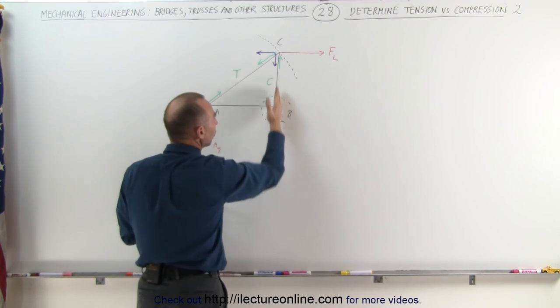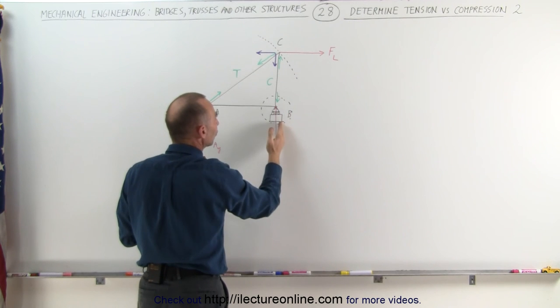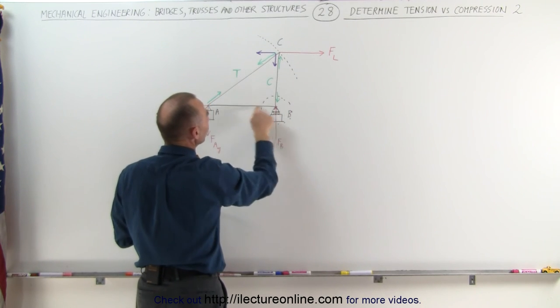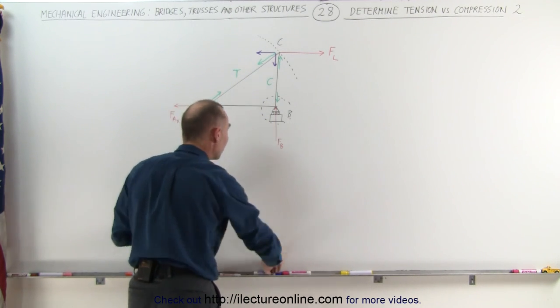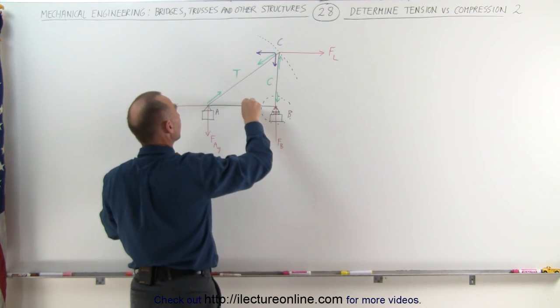Notice that the forces only act in this direction on this member and not this joint right here. That means there's no force over here to counterbalance the force in this member, which means that must be a zero member force. So we'll just go ahead and put a zero there.